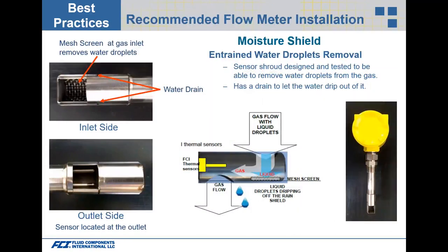Another option is a moisture shield — a shroud with a mesh screen that knocks out water droplets, plus drain holes so water drains from the shroud. The active sensing element or flow element on the outlet side stays clean because water droplets are knocked out before reaching it. This is a great option when there's a lot of water vapor entrained in the gas.